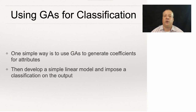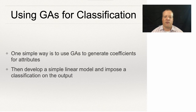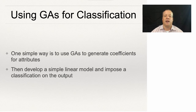So how do you actually use the genetic algorithm for applications? One example is in the classification example I talked about before, where you could use the GA to generate coefficients for attributes, then develop a simple linear model that classifies that.